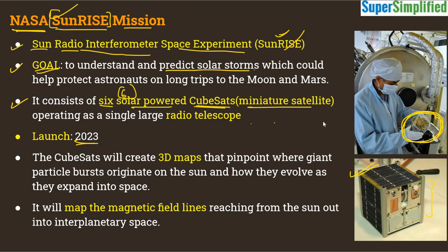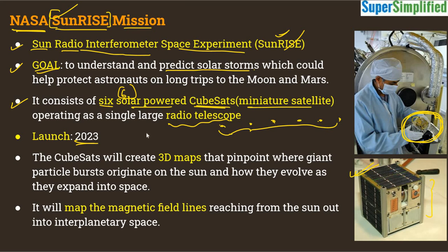These six satellites will be maintained at some distance from each other outside Earth's atmosphere. Together, this cluster of six satellites will function as a radio telescope. They are intentionally kept outside the ionosphere of Earth, because the ionosphere protects Earth from charged particles — so to study those charged particles, the probe must be outside the ionosphere, exposed to particles coming from the Sun.